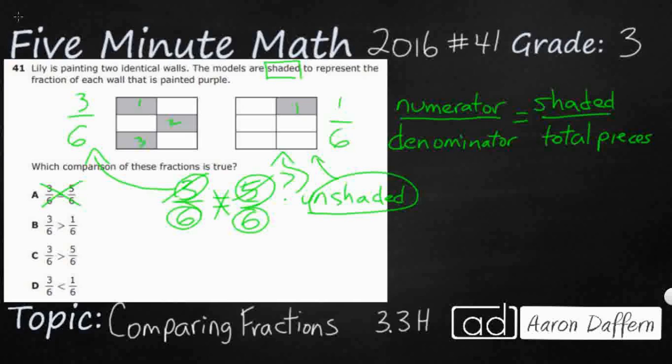So B, we've got 3 sixths and 1 sixths. So let's just at least put a question mark right there. Let's put a question mark right there. I want to take a look at this one, because we've got the 3 sixths, and we've got the 5 sixths.